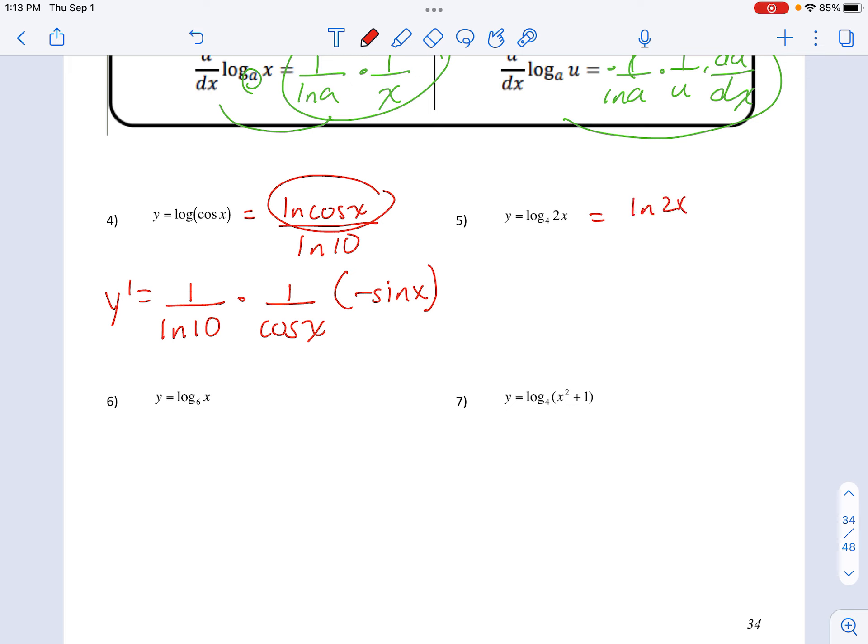This one gets rewritten like this. So the derivative, pull out the 1 over natural log of 4. Derivative of this is 1 over 2x times the chain rule.